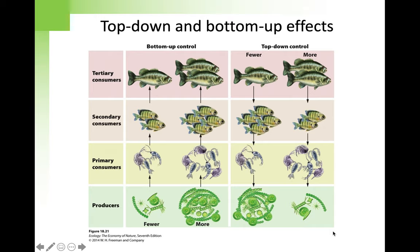Until on this rocky Pacific shore in 1963, young zoology professor Robert Payne pried a purple starfish off the rocks and threw it out into the bay. And so began one of the most important experiments in the history of ecology.